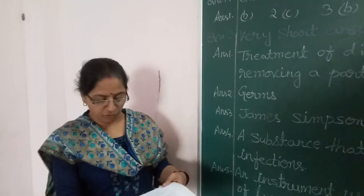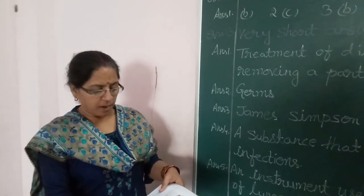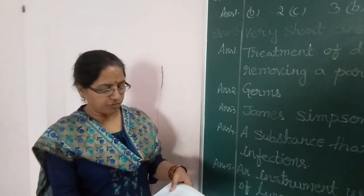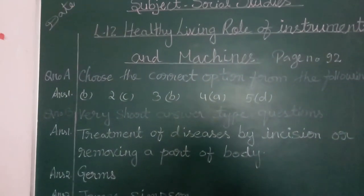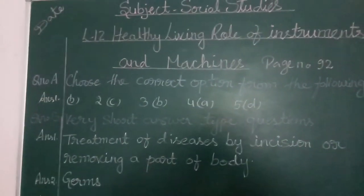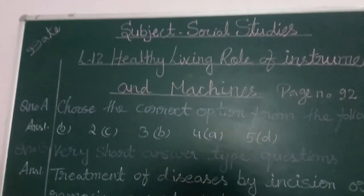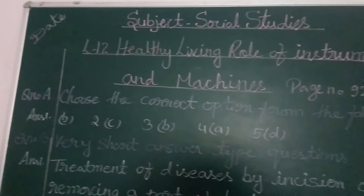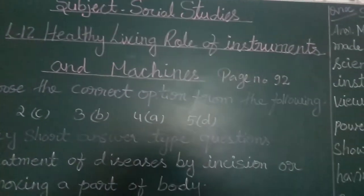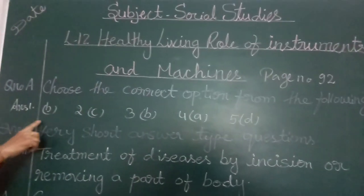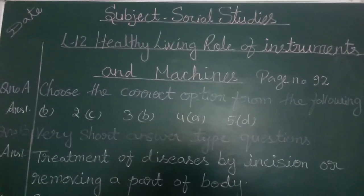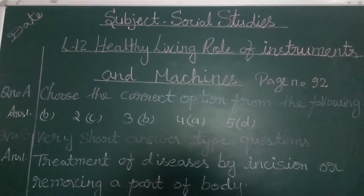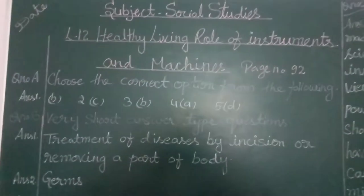Take out your page number 92. Multiple choice questions — choose the correct option from the following. Number 1: Which of the following is the normal temperature of the human body? Answer is B — 98.6°F.